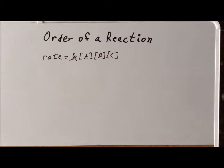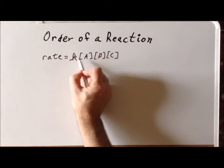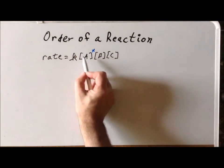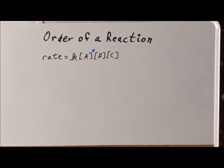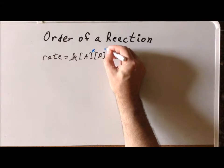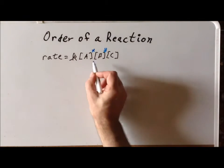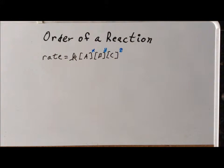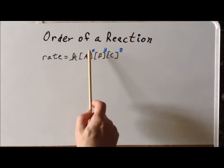There will be a reaction order relative to each of these particular reactants. For example, there will be a reaction order just related to A, so that's the superscript we have there. We'll call the reaction order with respect to A, x. We also have the order with respect to B, and we'll use y for that. And the reaction order with respect to C will be z. When we have such an expression, the overall order of the reaction, the total order, will be x plus y plus z.